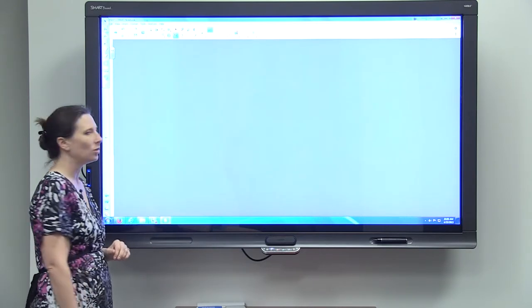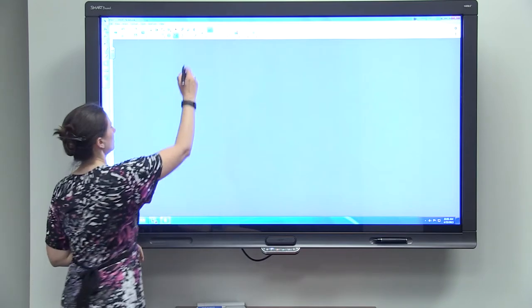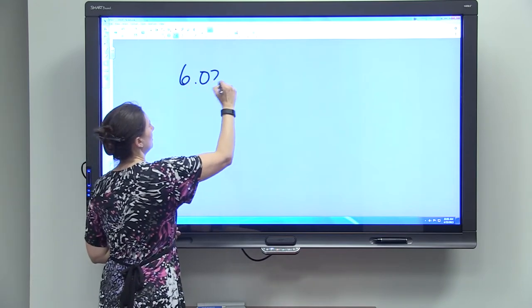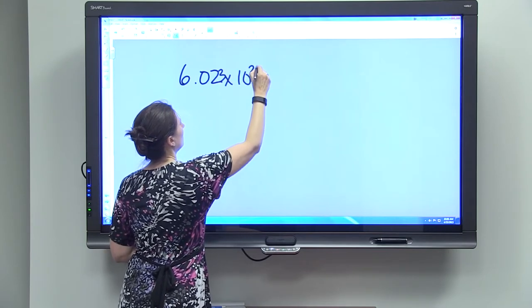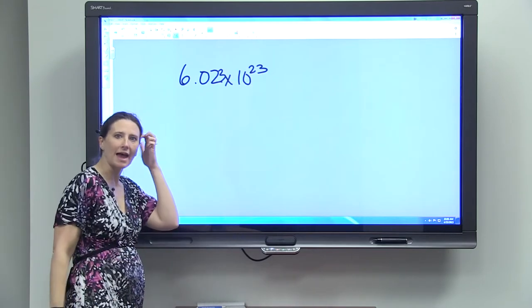A mole is used, that number 6.023 times 10 to the 23rd, is used to measure atoms and molecules.